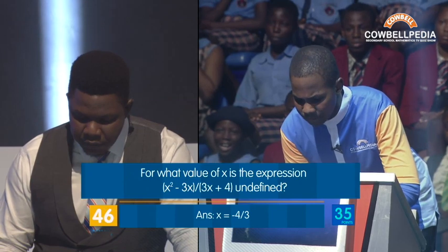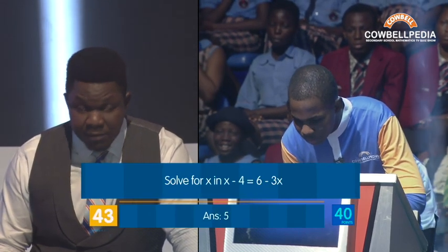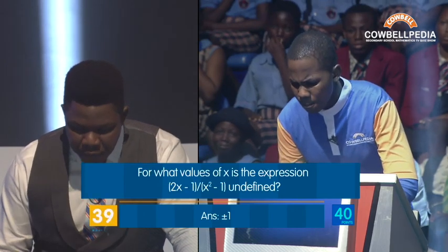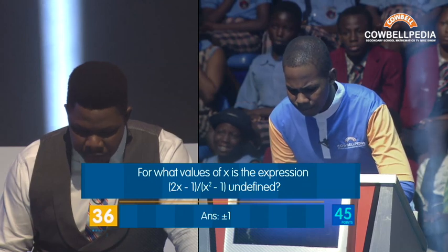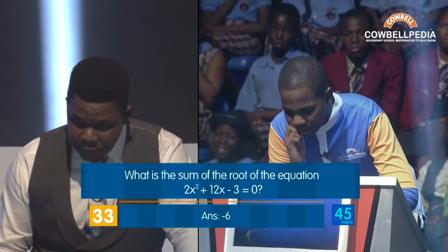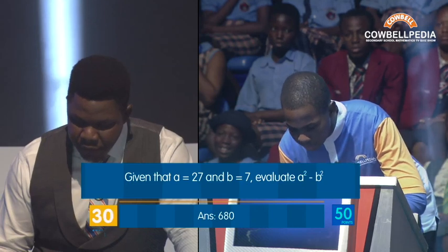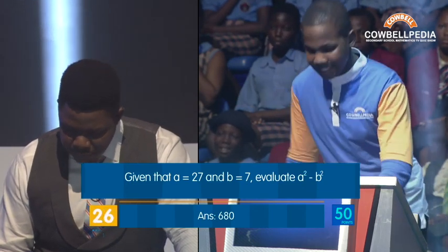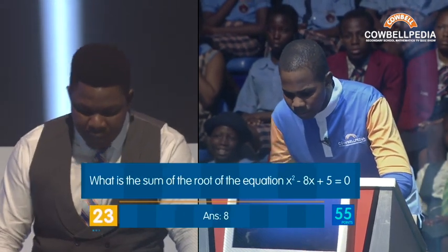For what value — minus 4 over 3. Correct. Solve for X in X minus 4 equals 6 minus 3X — 5 over 2. Incorrect. For what values of X is the expression — plus or minus 1. Correct. What is the sum of the roots of the equation 2X squared — minus 6. Correct. Given that A is 27 and B is 7, evaluate A squared minus B squared — M680. Correct. What is the sum of the root — X. Correct.